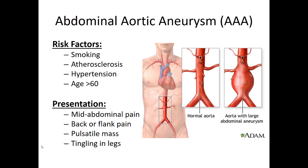An abdominal aortic aneurysm is different from a dissection — it's a ballooning of the vessel wall that can rupture if it gets too big, and it's typically not painful until it reaches the point of rupture. Same risk factors apply: smokers with arterial disease and high blood pressure, usually over age 60. The pain tends to be mid-abdominal or in the lower flank. A pulsatile mass may be palpable, but it's honestly difficult to find. As blood pools in the abdominal cavity, patients may have decreased blood flow to their legs and complain of bilateral leg pain.